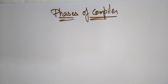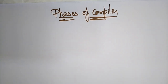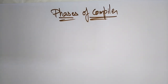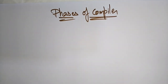Welcome back. In this video we are coming to the next topic in compiler design: phases of the compiler. We'll learn about the structure of the compiler. In the previous video I explained the language processing system — how a high-level language program is internally converted into assembly language and then into machine code. Now let's focus only on the compiler and what phases are present in it.